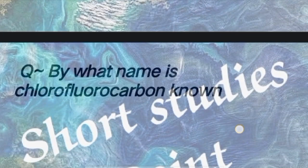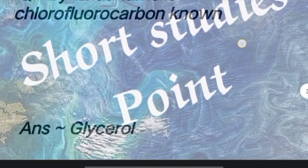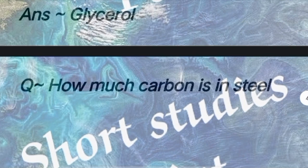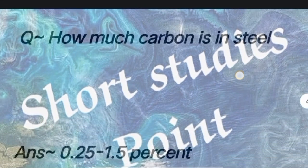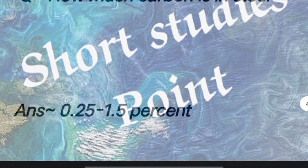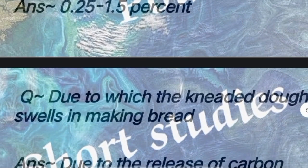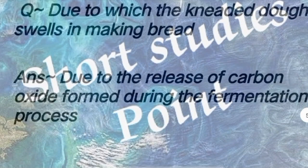Question: By what name is chlorofluorocarbon known? Answer: Glycerol. Next question: How much carbon is present in steel? Answer: 0.25 to 1.5 percent. Next question: Due to what does dough swell while making bread? Answer: Due to the release of carbon dioxide.